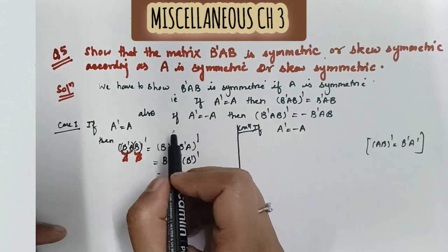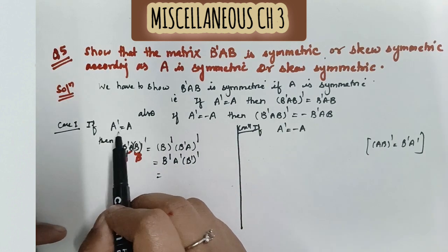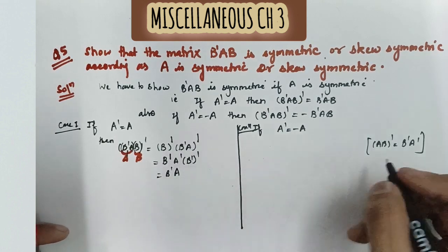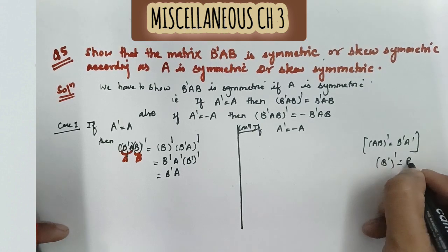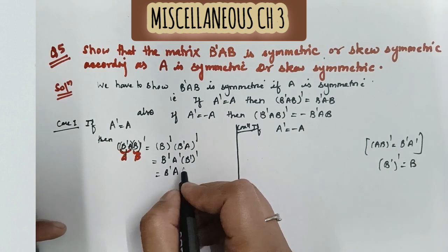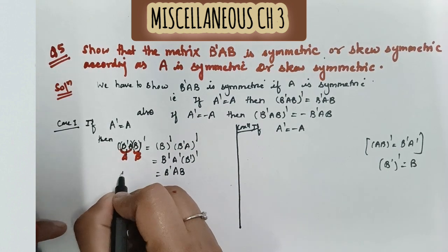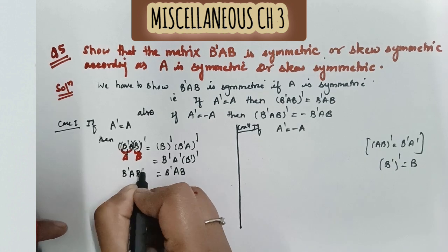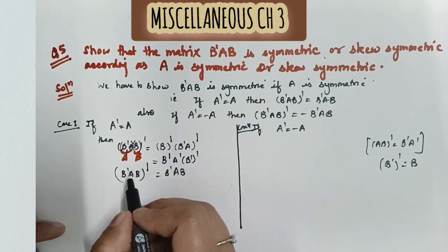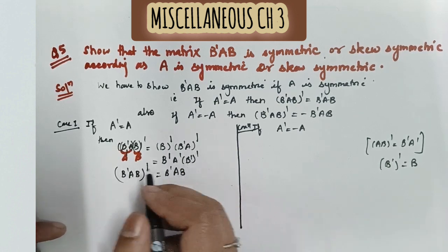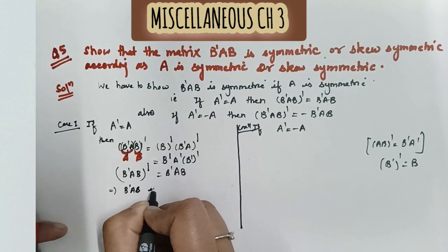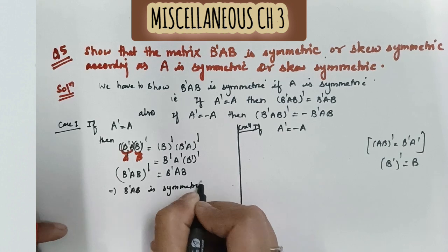Since A is a symmetric matrix in Case 1, A transpose equals A. Also, by the theorem, transpose of a transpose of a matrix equals the original matrix, so (B transpose) transpose equals B. Substituting these, we started with (B'AB) transpose and we are getting B'AB originally. Since the transpose equals the original matrix, this implies B'AB is a symmetric matrix. We assumed A is symmetric and we are able to show B'AB is also symmetric.